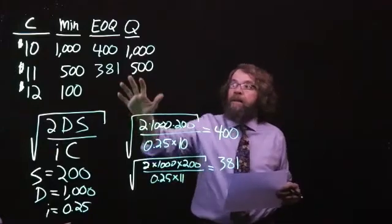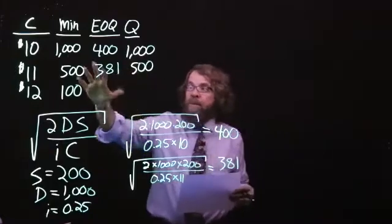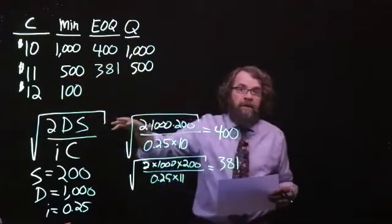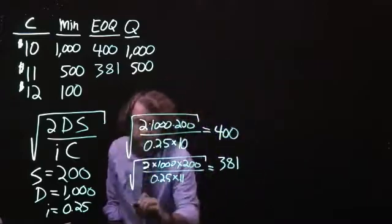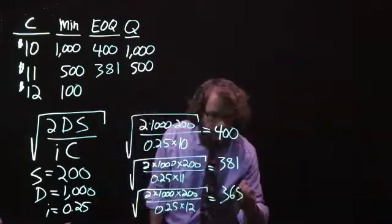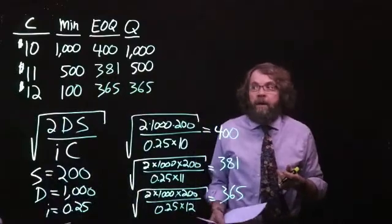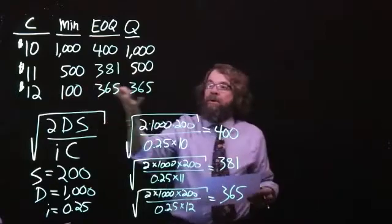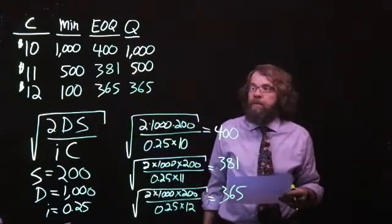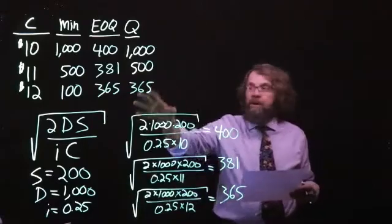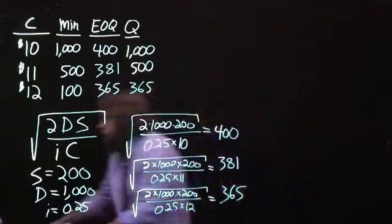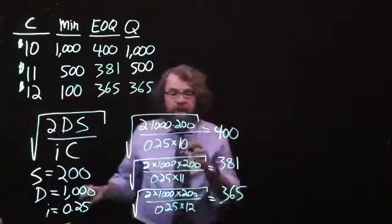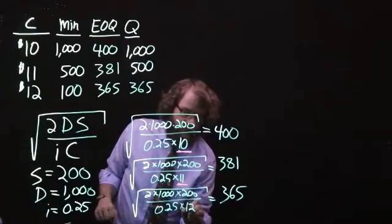Lastly, because 381 was not big enough to put us into the range where this price was relevant, we have to go to the next cheapest price, $12. That EOQ returned us a value of 365, and because 365 is larger than 100, we will evaluate the total costs using an order size of 365 and a price of $12. We would just like to highlight that in these three EOQs, the only thing that changed was the price per unit.